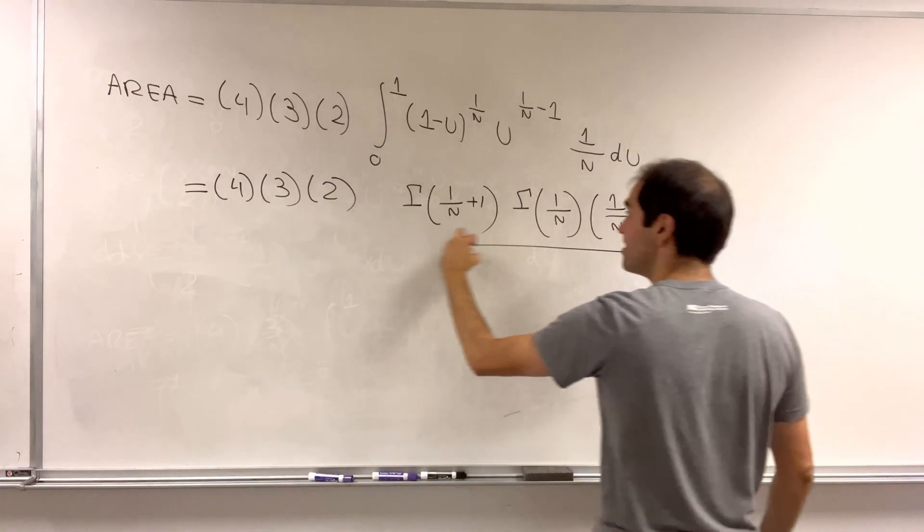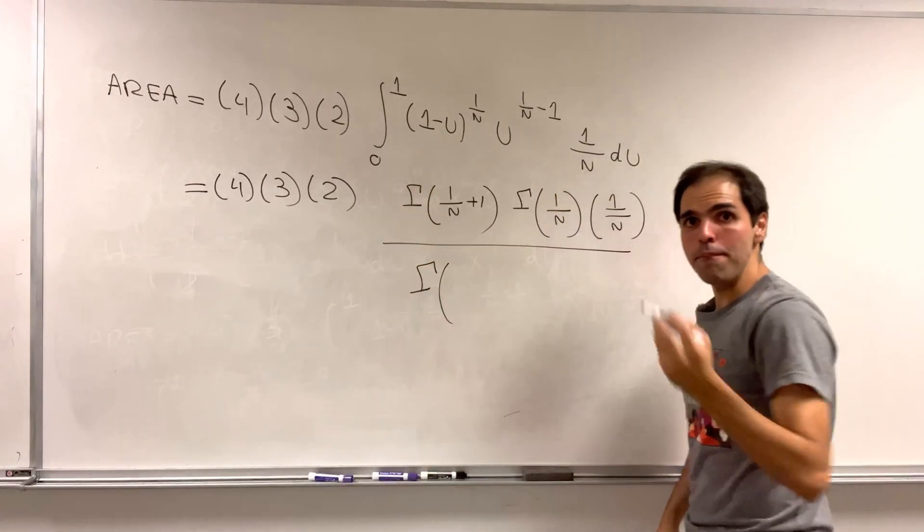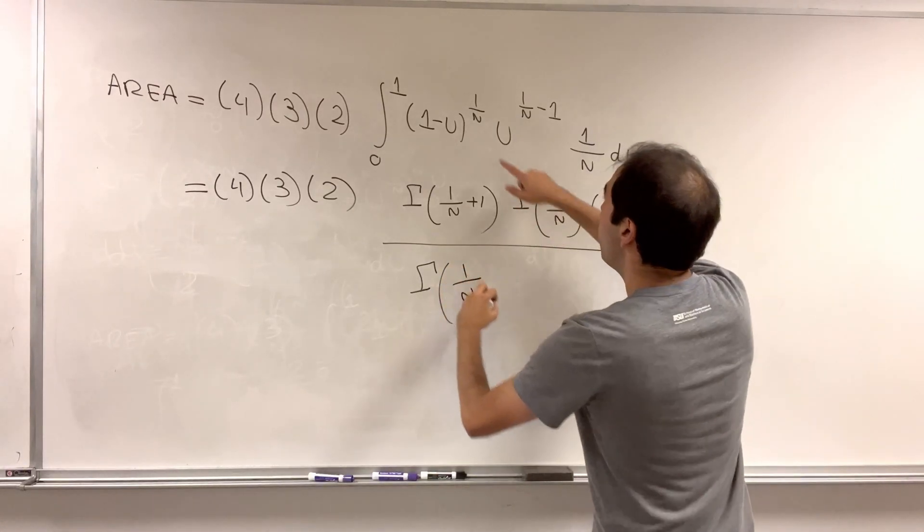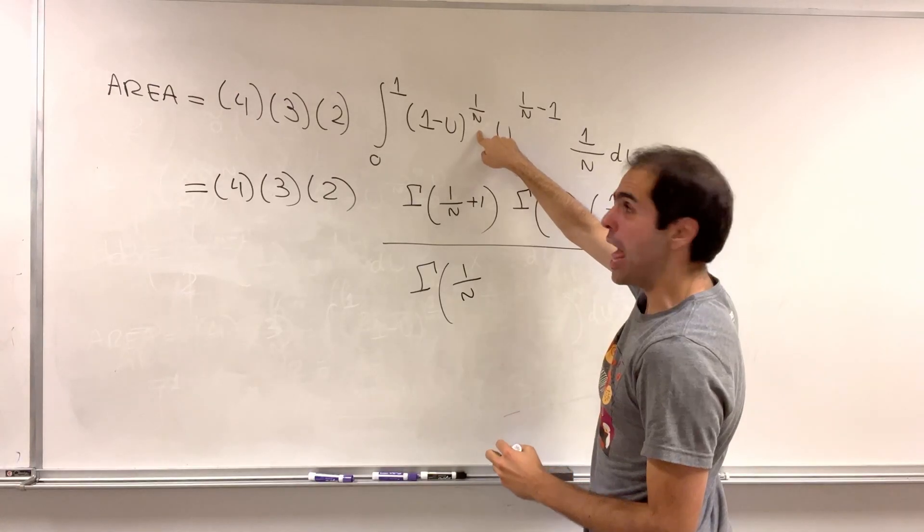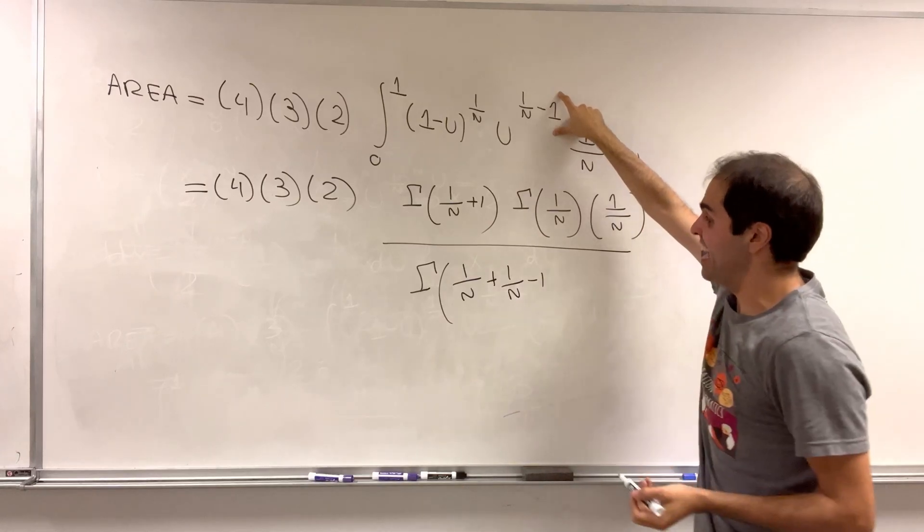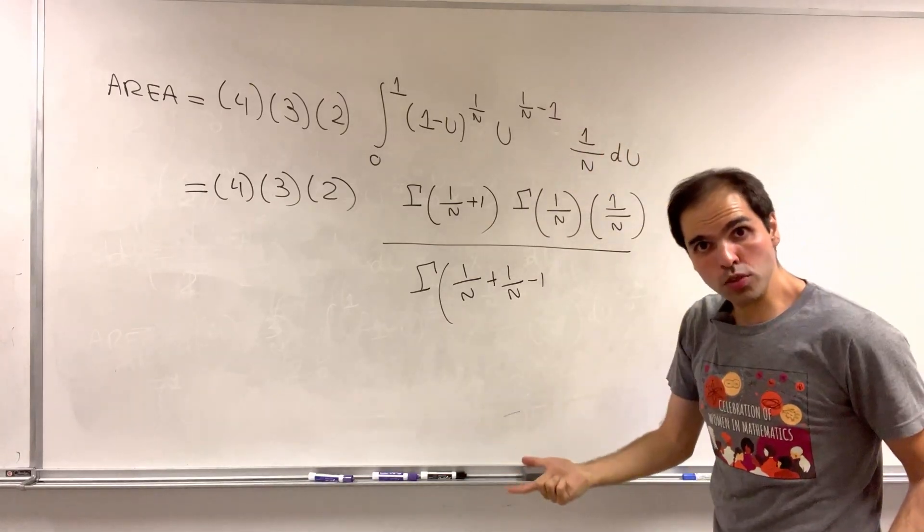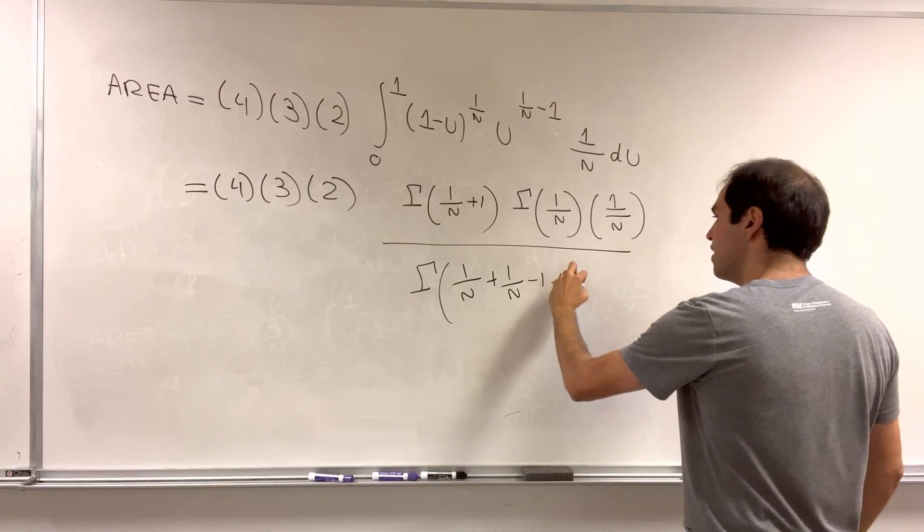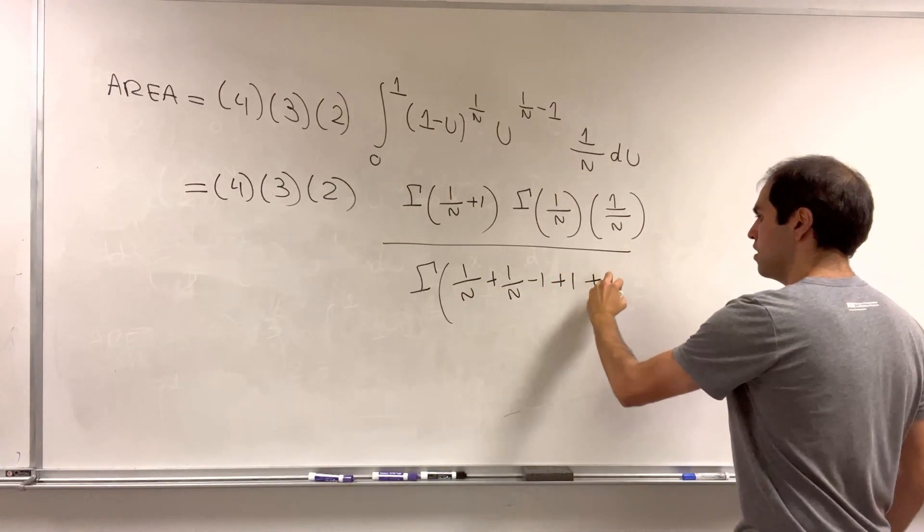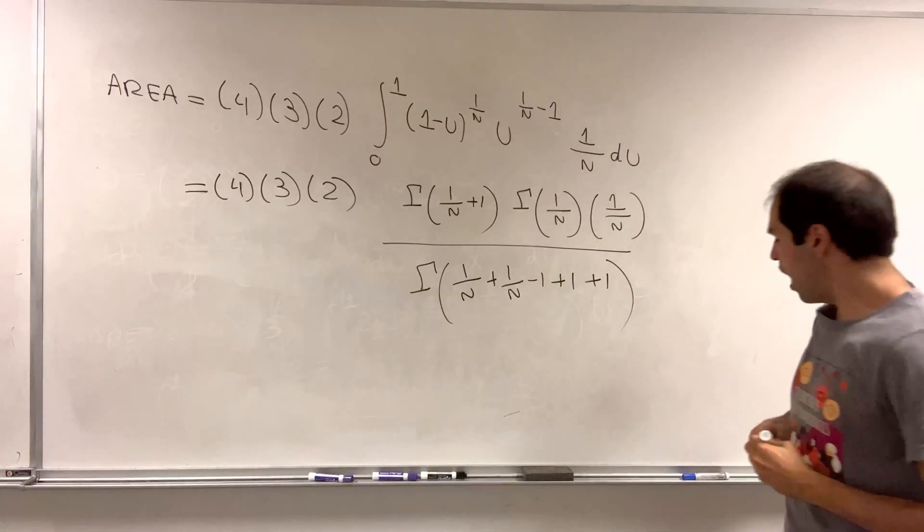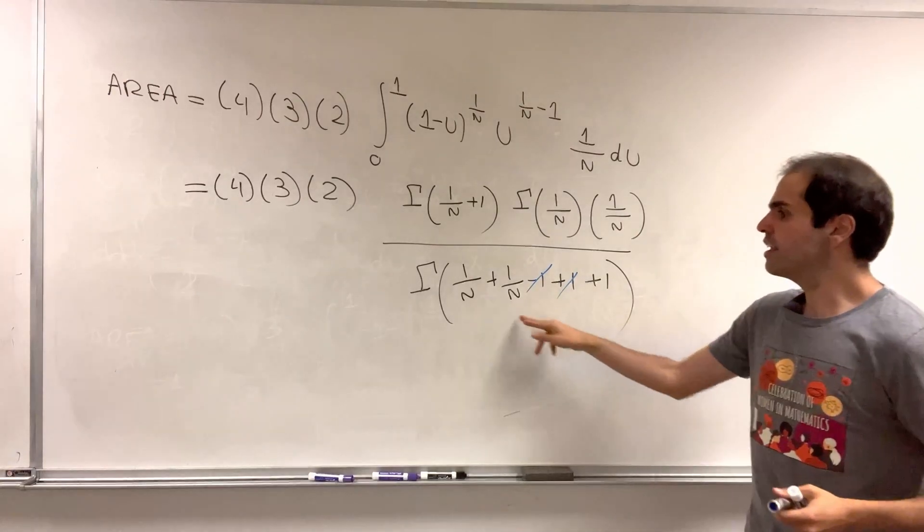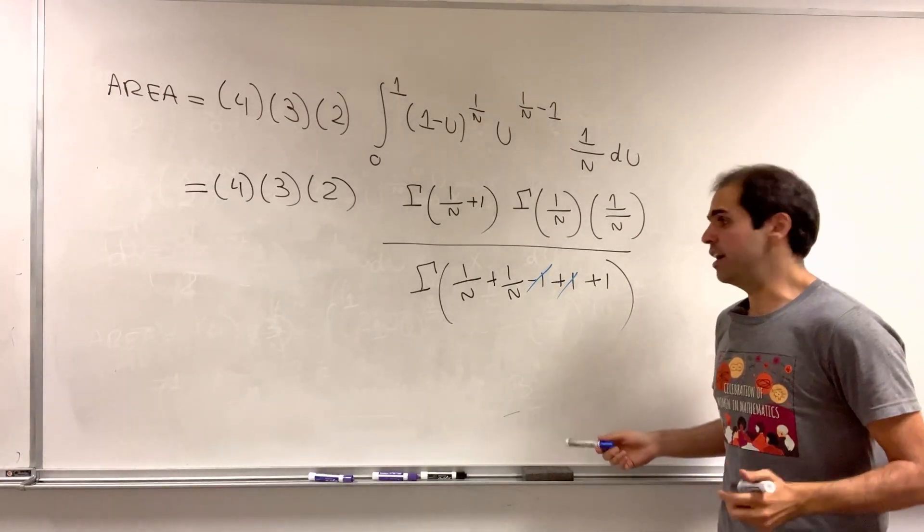Lastly, we need the analog of m plus n plus 1 factorial. So we have 1 over n, that is the m. The 1 over n minus 1, that is the n. Now plus 1 because of this plus 1 factorial, and then plus 1 because we're using gamma. The nice thing is this simplifies—the minus 1 and the 1 cancel out, and you get gamma of 2 over n plus 1.